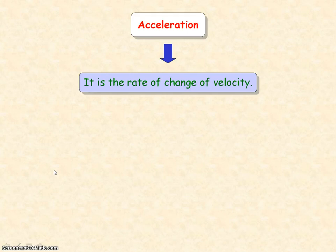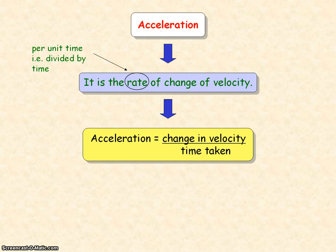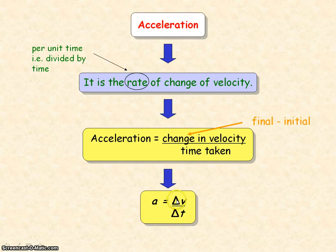Acceleration is defined as the rate of change of velocity — rate means dividing by time or per unit time. So acceleration can also be defined as the change of velocity per unit time. The change in velocity means final velocity minus initial velocity. Mathematically, acceleration a = ΔV / Δt, where ΔV is the change in velocity and Δt is the change in time.